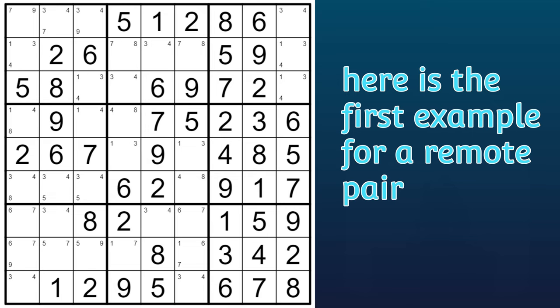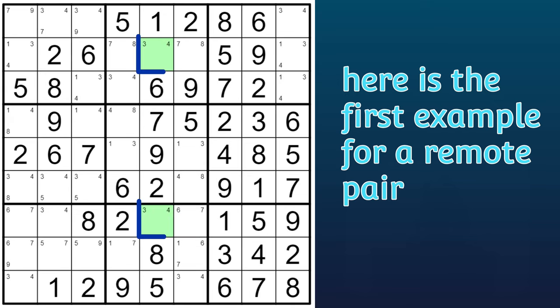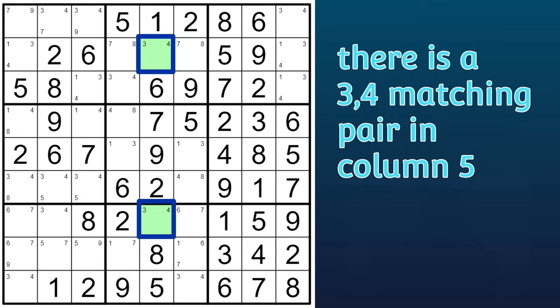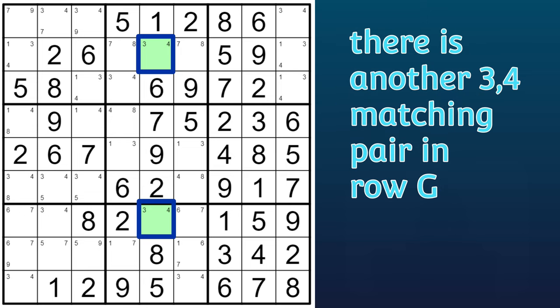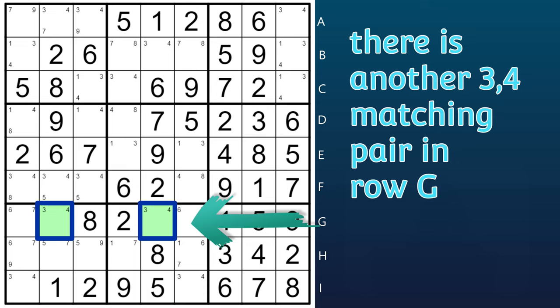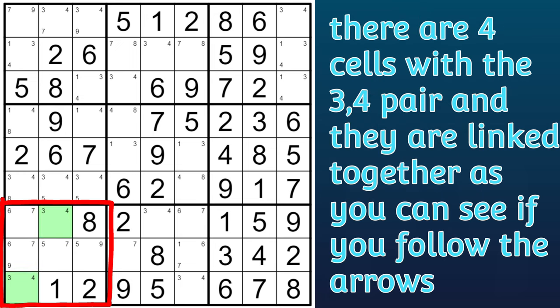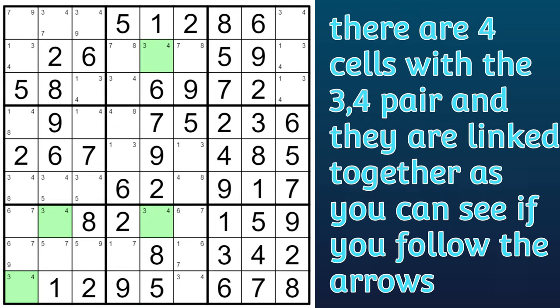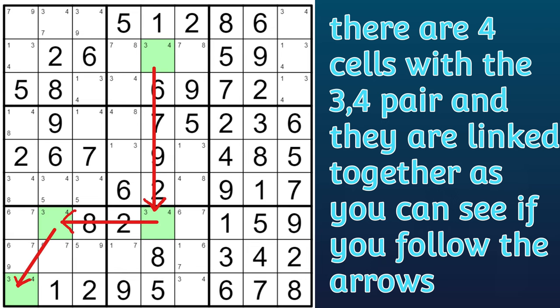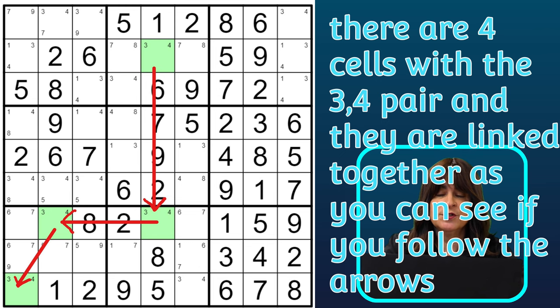Let's take a look at this first example. There's a 3-4 matching pair here in column 5 — these two cells are the only cells in column 5 that are either a 3 or a 4. Then we have another matching pair here in row G, where the 3 and the 4 can only be in those two cells. And one more matching pair in block 7, where the 3 and the 4 can only go in those cells. So here we have four cells containing a 3-4 pair, linked one to the other by a chain, as you see with these arrows. Now let's follow the chain making assumptions or inferences.